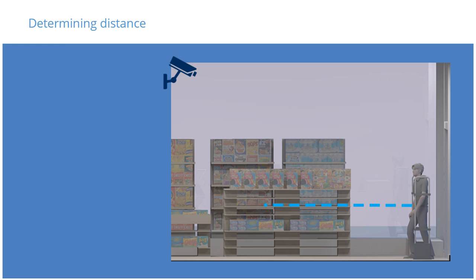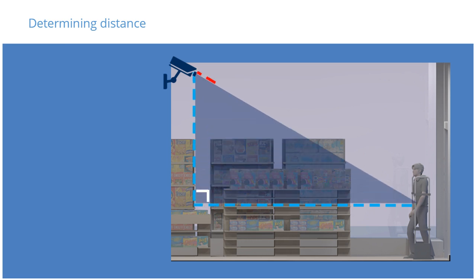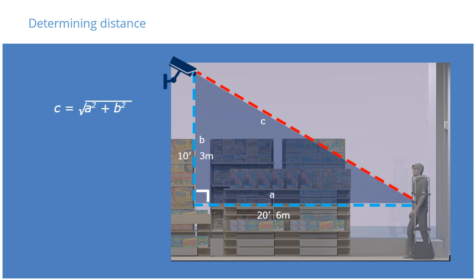To calculate the actual distance from the camera to the subject, you must use a variation of the Pythagorean theorem: c equals the square root of a squared plus b squared. For example, if the distance from a ceiling-mounted camera is 20 feet (a) and the height of the camera is 10 feet (b), this gives us a squared (400) plus b squared (100) equals c squared (500). The square root of 500 is approximately 22 feet, which is the correct distance from the camera to the subject.